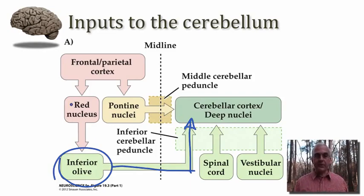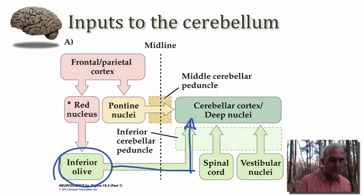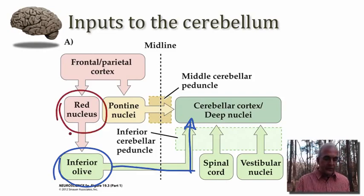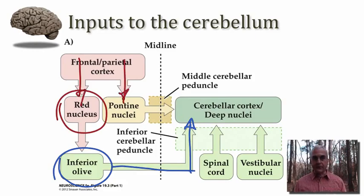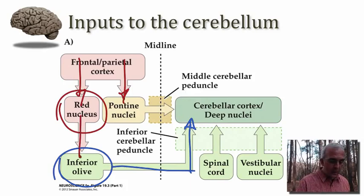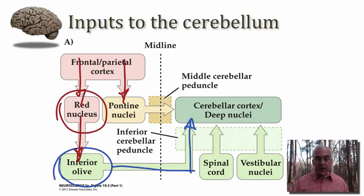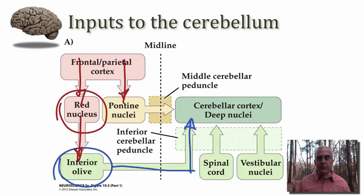The inferior olive is in turn getting inputs descending from a pathway derived from the cerebral cortex, and the relay in this pathway is the red nucleus. The cortex sends its executive signals into the cerebellum via a relay in the pons, but it's also informing the red nucleus, which in turn activates the inferior olive. When the inferior olive is active, the cerebellum will engage in synaptic plasticity and, we think, produce an error correction signal that can improve performance.